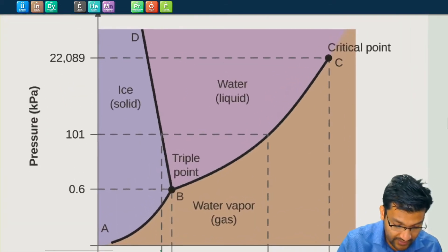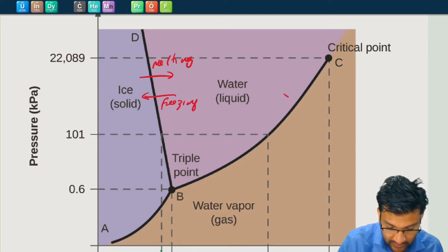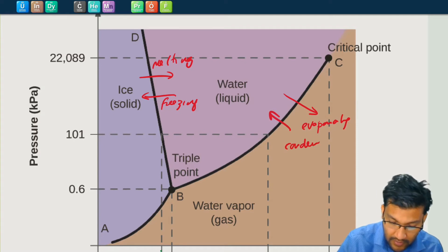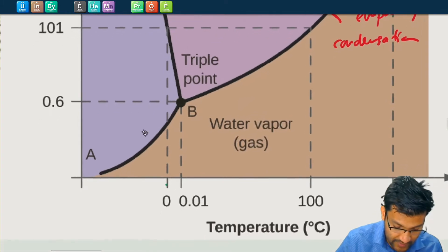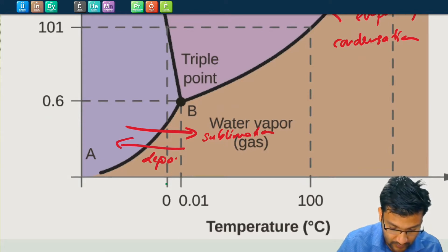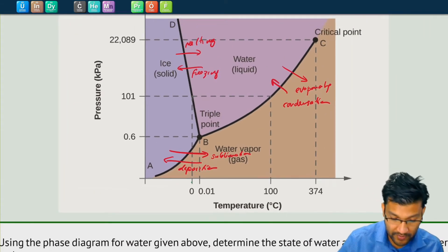All of these boundaries are giving us different processes. If we go from ice to water, that's when melting happens — or freezing if you go backwards. Water to water vapor, this is evaporating, and backwards is condensation. And then going straight from a solid to a gas, this is where sublimation happens, and the reverse is deposition.